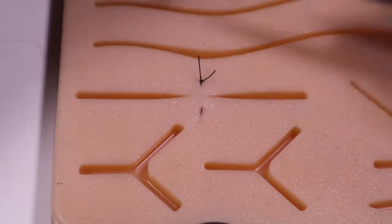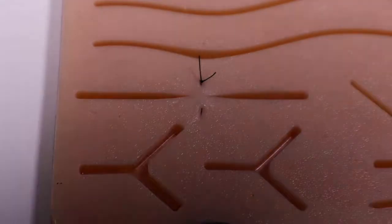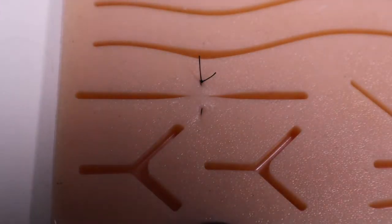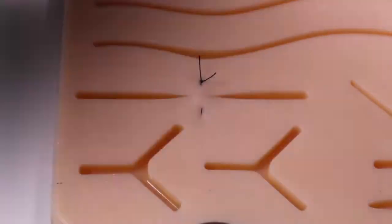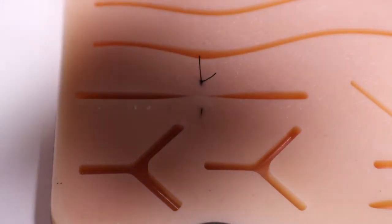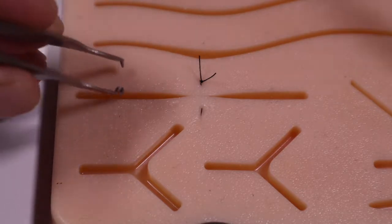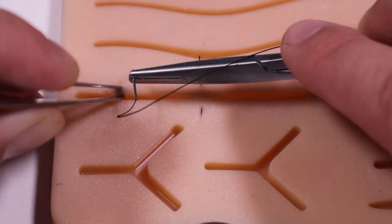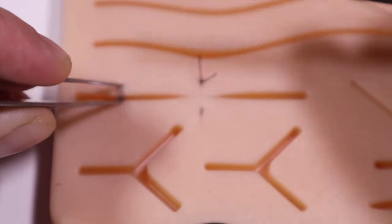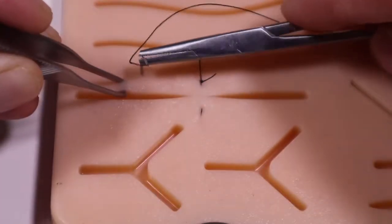Leave approximately one centimeter tail when you cut to allow for easy removal, and that's our first vertical mattress interrupted stitch. We'll divide each remaining segment by halves just as we do for our others.